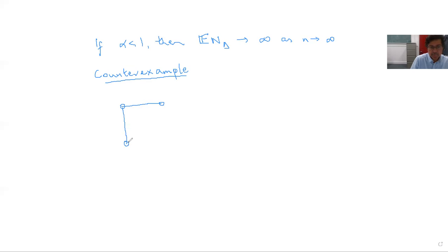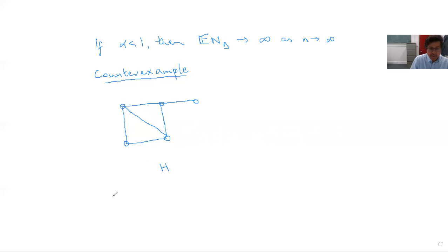The graph I'm going to look at is a square with one of its diagonals present, plus a dangling hook. We'll denote this graph by H. So H is a graph on 5 vertices and 6 edges (4 for the square, plus the diagonal, plus the hook edge). We also consider the subgraph H' consisting of just the square with its diagonal — so H' has 4 vertices and 5 edges.